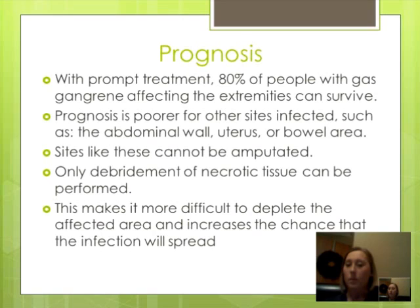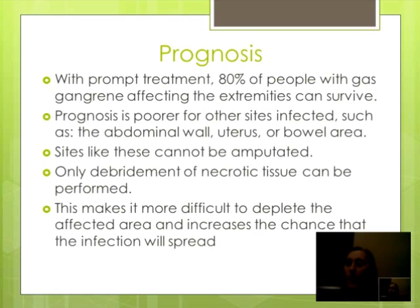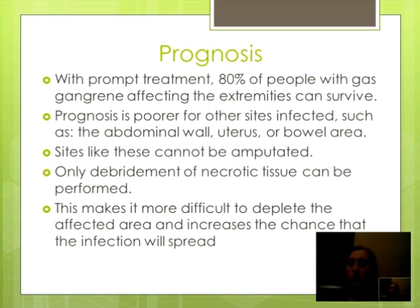With prompt treatment, 80% of people with gas gangrene affecting the extremities will survive. Prognosis is poor for other sites infected, such as the abdominal wall, uterus, and bowel area. Sites like these cannot be amputated — only debridement of the necrotic tissue can be performed. This makes it more difficult to deplete the affected area and increases the chance that infection will spread.